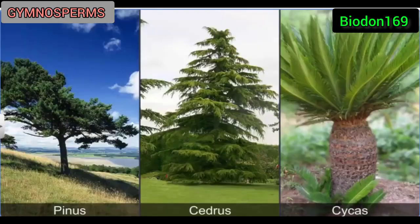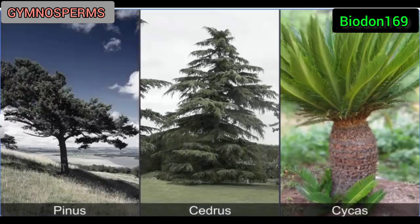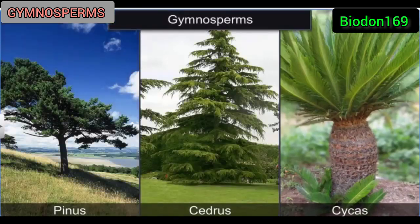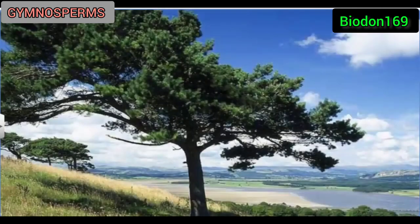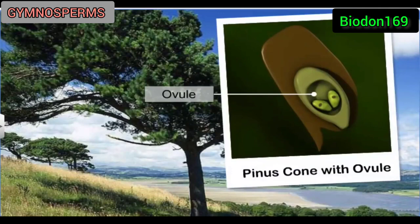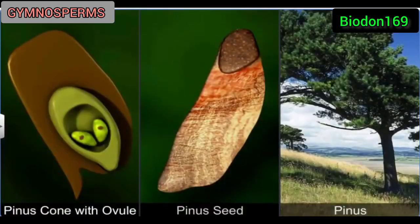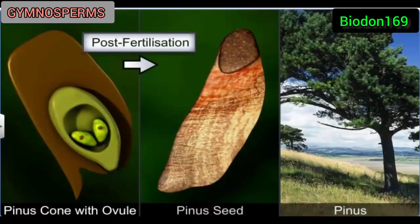It is common to find trees such as Pinus, Cedrus, and Cycas growing in the cooler regions of India. All of them are gymnosperms — a group of plants in which the ovules are not enclosed by an ovary wall, and remain exposed or naked before fertilization, as well as post fertilization, when they develop into seeds.